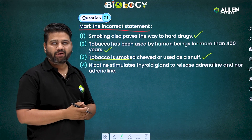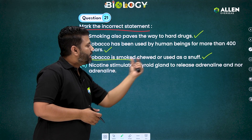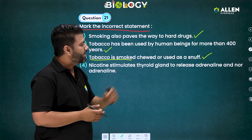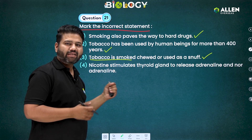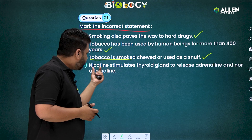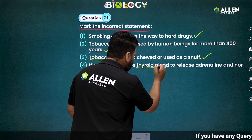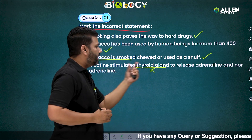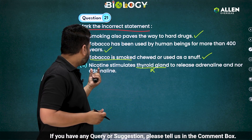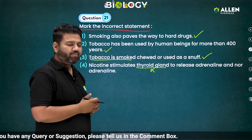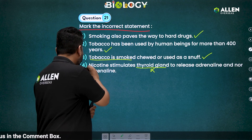The fourth statement says nicotine stimulates the thyroid gland to release adrenaline and noradrenaline. This statement is incorrect because nicotine actually stimulates the adrenal gland — not the thyroid gland — to release adrenaline and noradrenaline. Therefore this statement is incorrect, and the answer to question 21 is option number four.